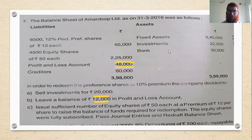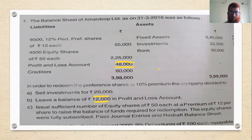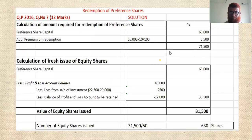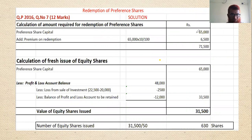Now we will see the calculation. First, the calculation of amount required for redemption of preference shares: ₹65,000 preference share capital plus 10% premium of ₹6,500 means ₹71,500 is required. Next, calculation of equity shares to issue.